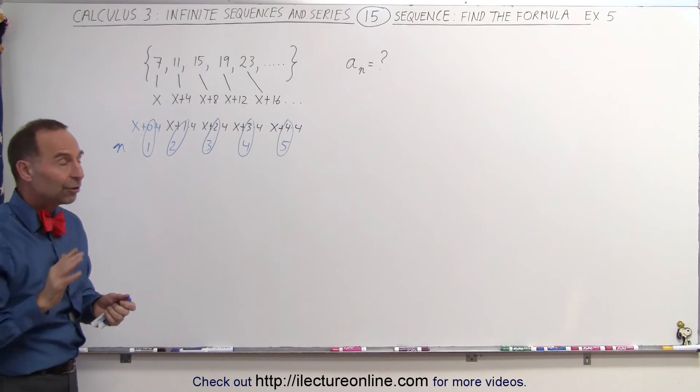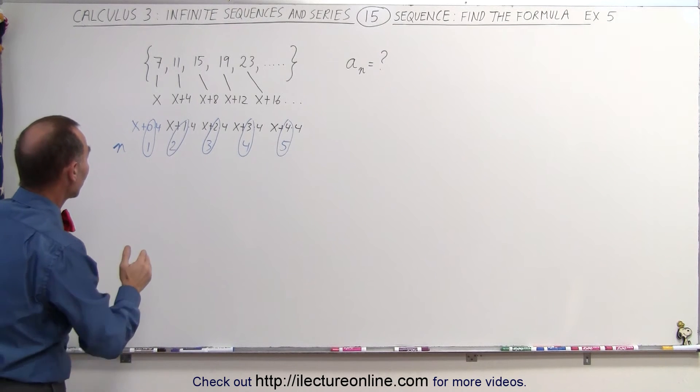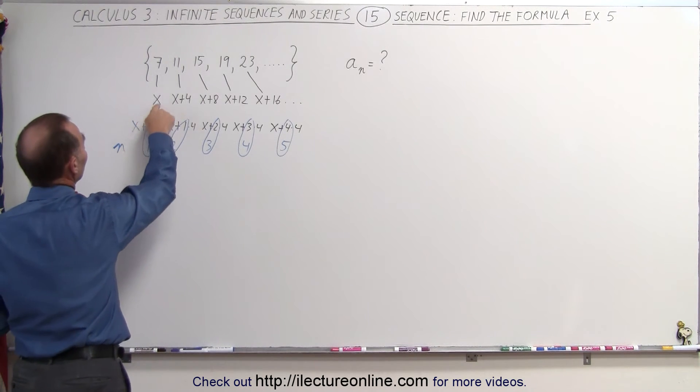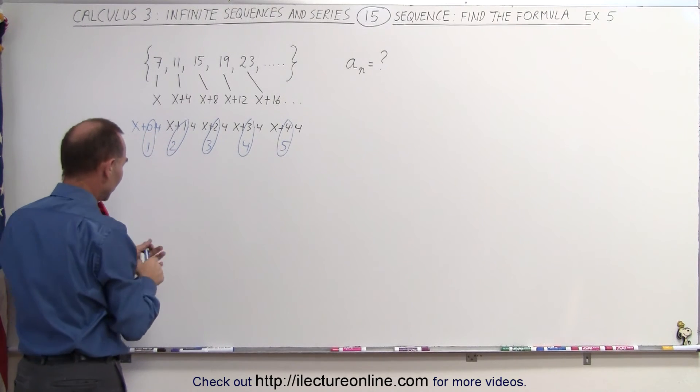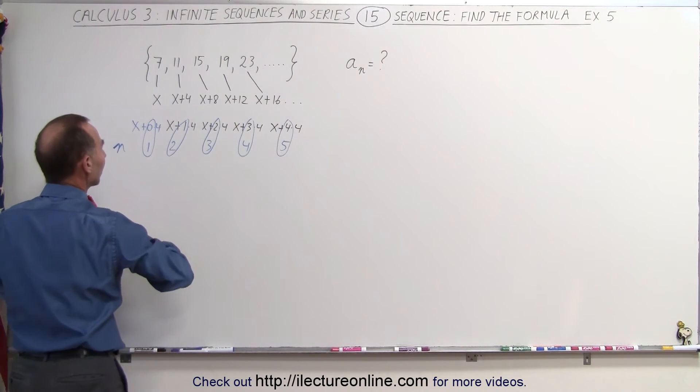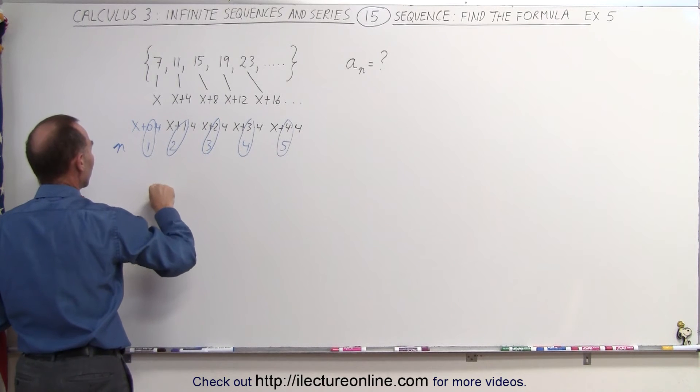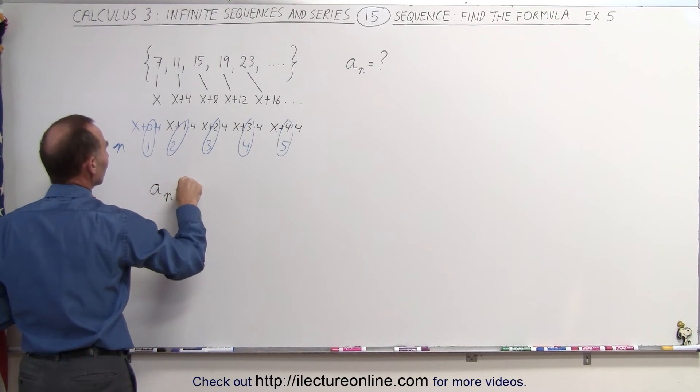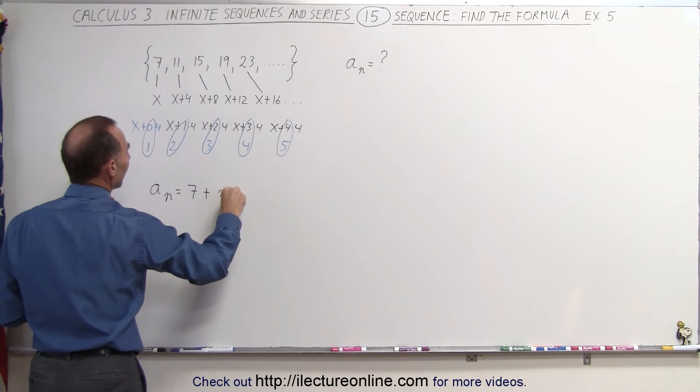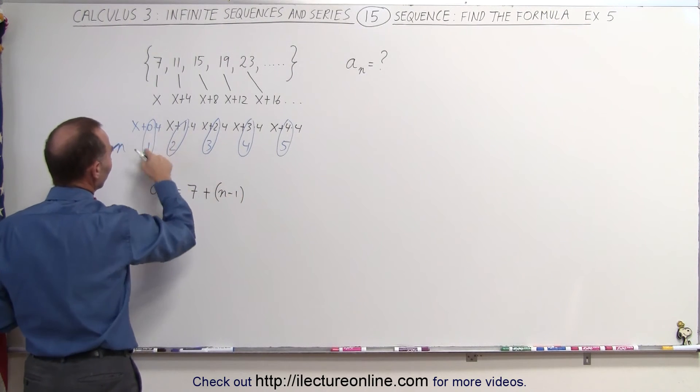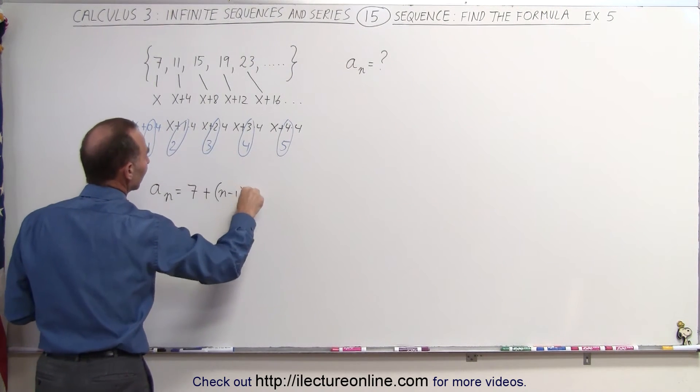Which means that every term can now be expressed in terms of some offset x, which in this case is 7, plus n minus 1 times the number 4. So finally we can see that the sequence can be expressed as a sub n, which is equal to 7, the starting number, plus n minus 1, because we know we're offset by 1 relative to n, times the number 4.